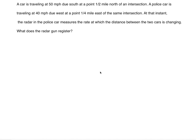In this problem we're going to discuss how to use related rates. A car is traveling at 50 miles per hour due south at a point one-half mile north of an intersection. A police car is traveling at 40 miles per hour due west at a point one-fourth mile east of the same intersection. At that instant, the radar in the police car measures the rate at which the distance between the two cars is changing — what does the radar gun register?